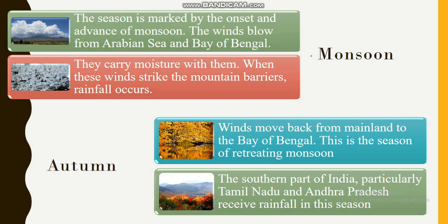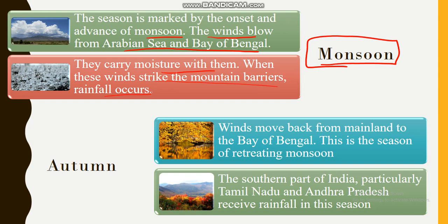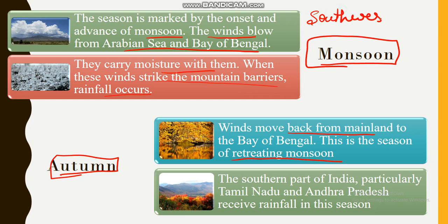Next comes monsoon. This season is marked by the onset and advance of monsoon. The winds blow from the Arabian Sea and Bay of Bengal and carry moisture with them. When these winds strike the mountain barriers, rainfall occurs. After monsoon, comes autumn — winds move back from the mainland to the Bay of Bengal, making it the season of retreating monsoon.